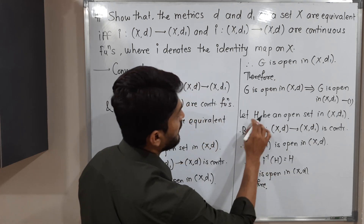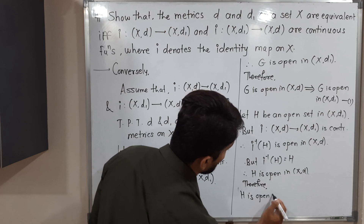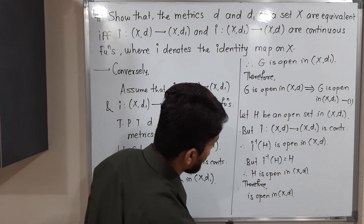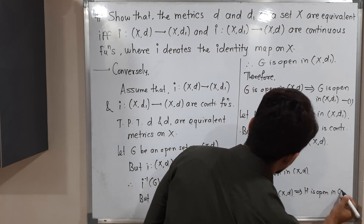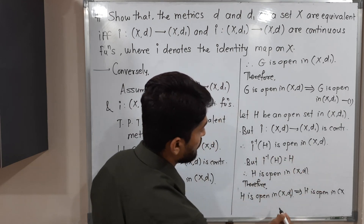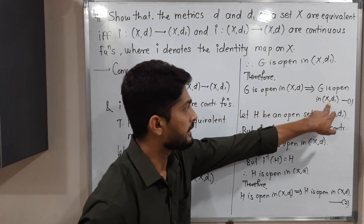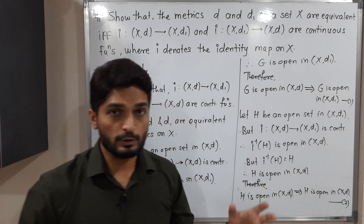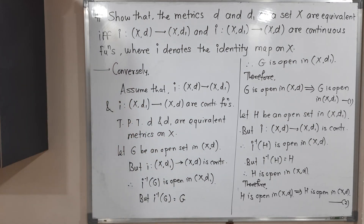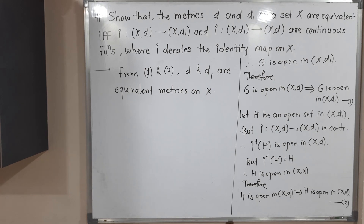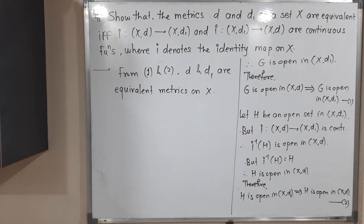Therefore H is open in (X,d). So we started with H open in (X,d1) and proved H is open in (X,d). Call this Statement 2. Combining Statements 1 and 2, d and d1 are equivalent metrics on X. In this way we have completed the example.